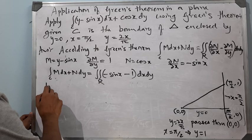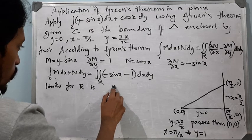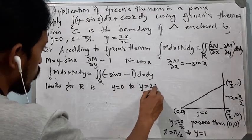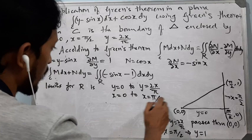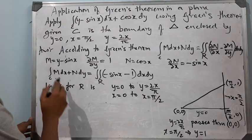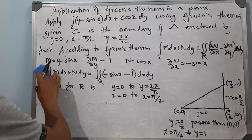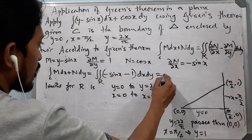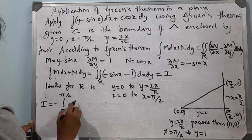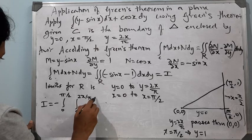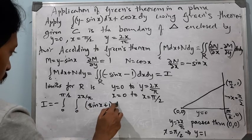The limits for region R are: y from 0 to 2x/π, and x from 0 to π/2. Let us call this integral I. So I = −∫₀^{π/2} ∫₀^{2x/π} (sin x + 1) dy dx.